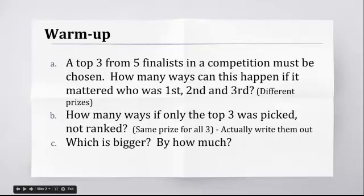Okay, here's a nice warm-up that you should spend some time on. It really helps to actually do this yourself, just to write them out. Top 3 from 5 finalists in a competition must be chosen. It could be a competition for anything, but you've got a top 3. How many ways can this happen if it mattered who was first, second, and third? Usually it matters who's first, second, and third.